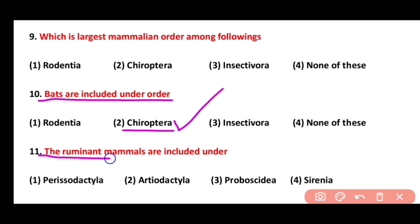Question 11. The ruminant mammals are included under which order? Perissodactyla, Artiodactyla, or Proboscidea. Correct answer is option 2. Ruminant mammals such as deer are included in order Artiodactyla.